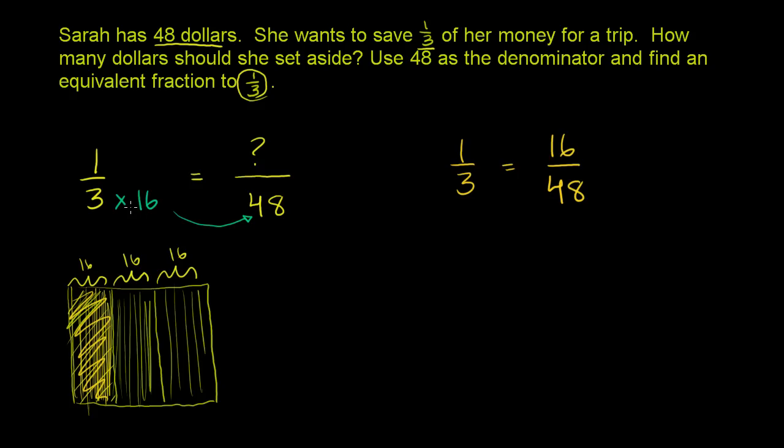Now, you can't just multiply only the denominator by 16. You have to multiply the numerator by the same number. Times the same number. And so if each of my pieces now become 16 pieces, then that one piece will now become 16. So one way to think about it, you just say, well, 3 times 16 is 48. So 1 times 16 will be my new numerator. So it'll be 16. So 1/3 is equal to 16 over 48.